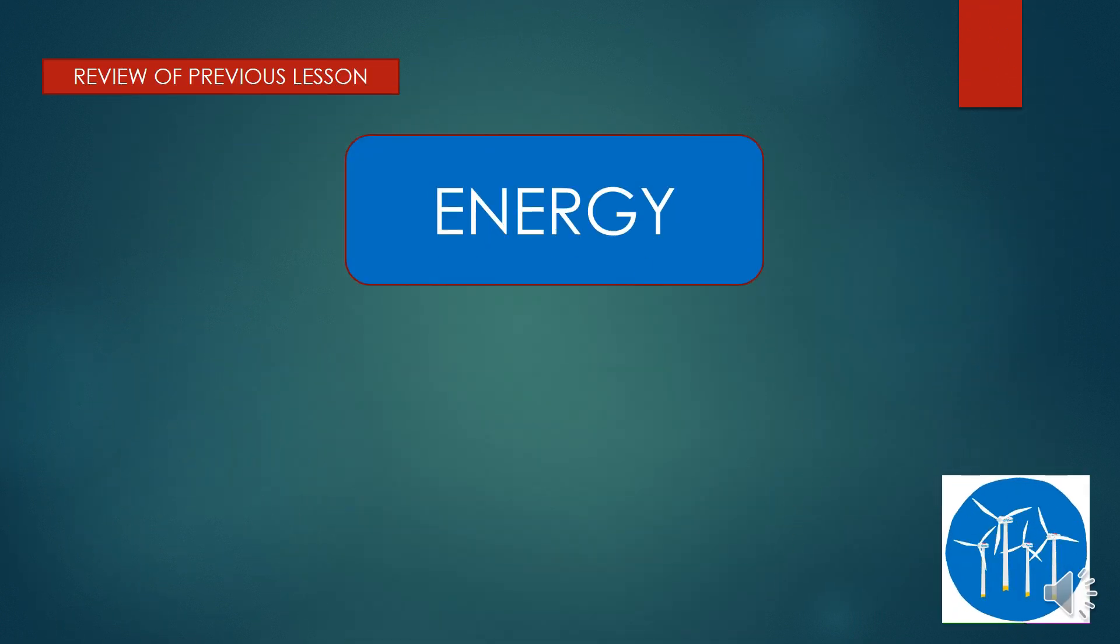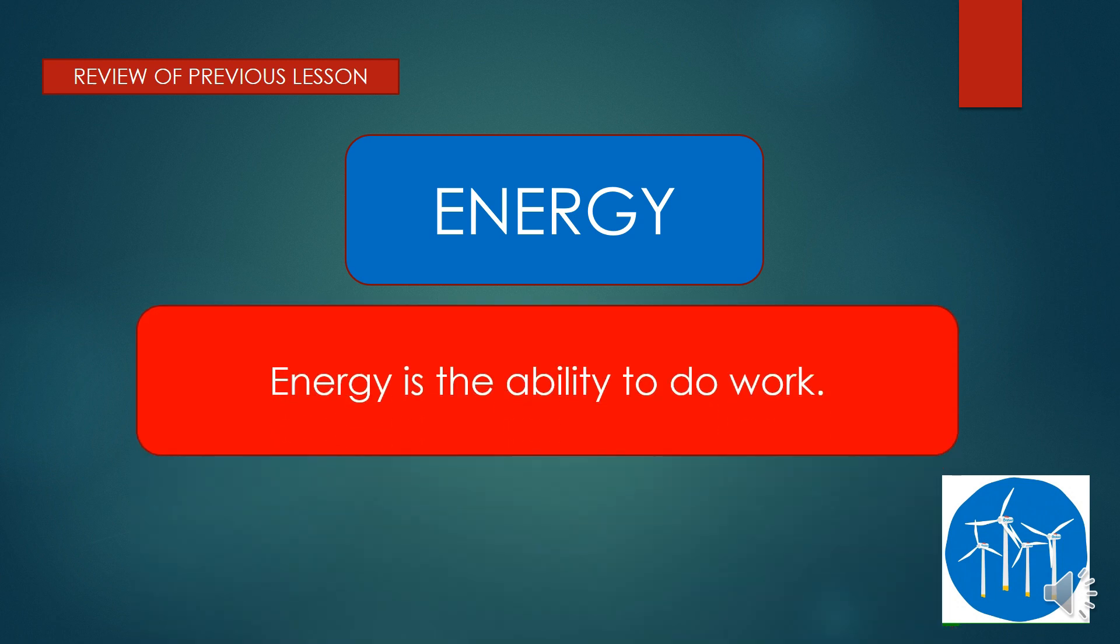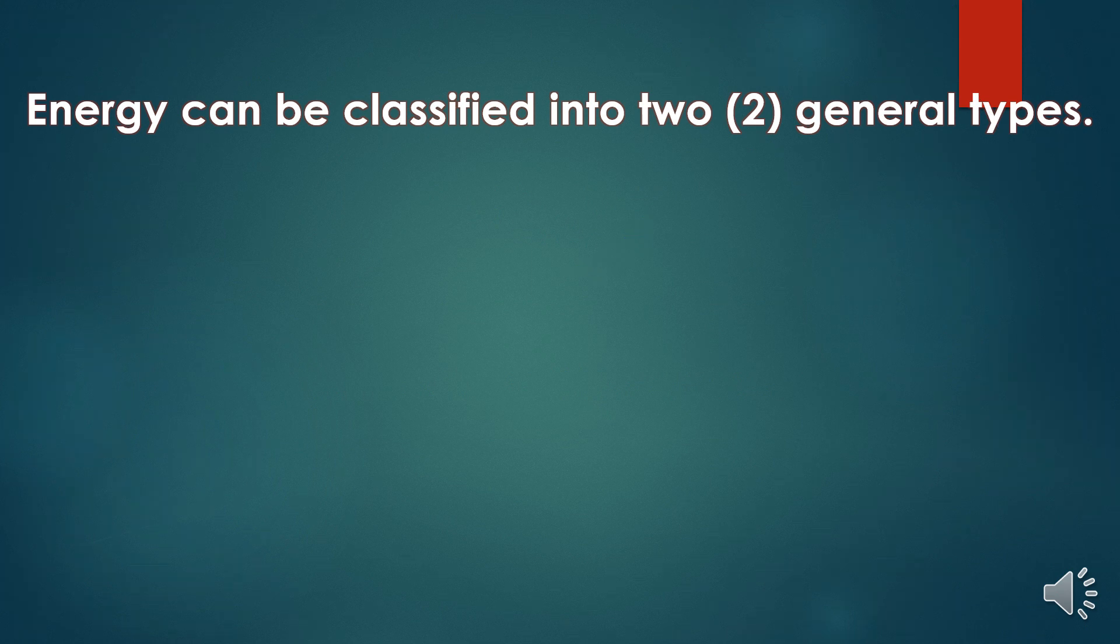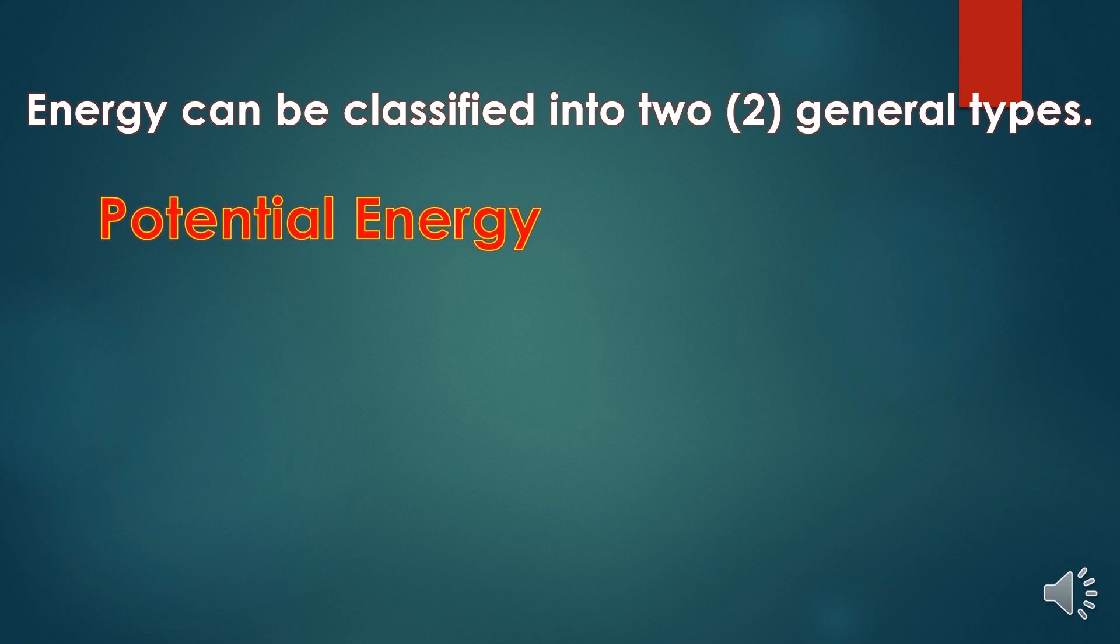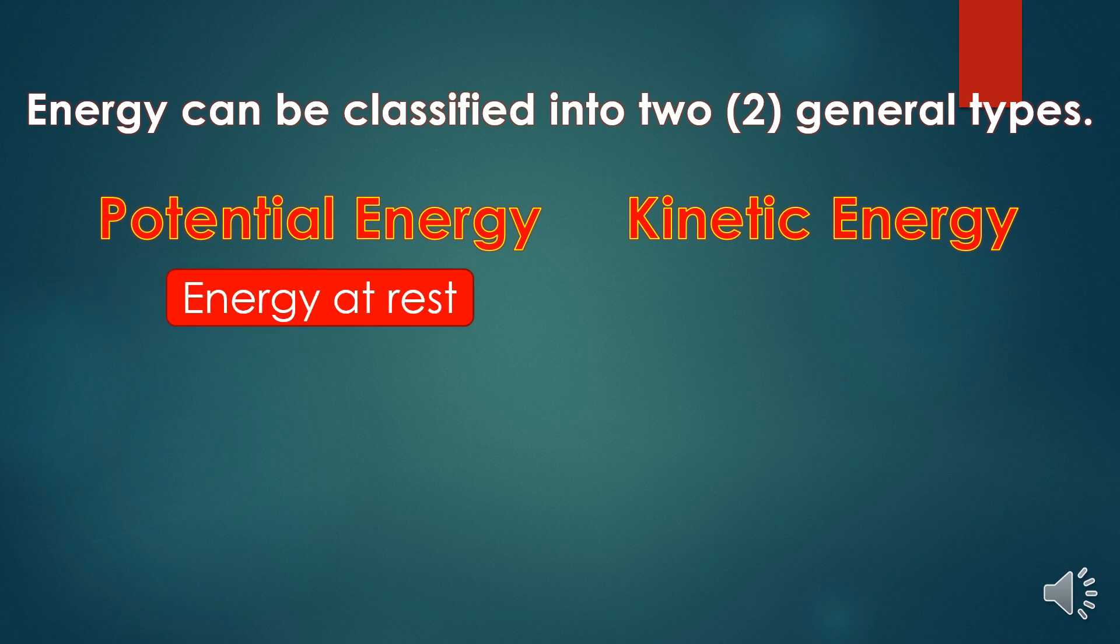Last time, you have learned about the types and forms of energy. Can you still remember it? I'm glad that you can still remember it. Energy is the ability to do work. Energy can be classified into two general types. Potential energy is the energy at rest, while kinetic energy is energy in motion.